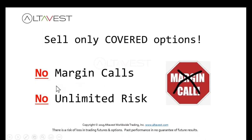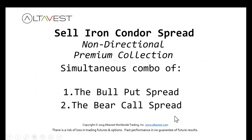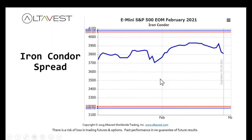Here's a big benefit: no margin calls when you're doing this type of trading. The market is not going to chase you out of your position — you are trading the market, it's not trading you. No unlimited risk; your risk is always predetermined. A combination of the put and call spread is called an iron condor. You sell an out-of-the-money call spread and put spread, collect premium on both sides, and look for the price to stay between those two boundaries.